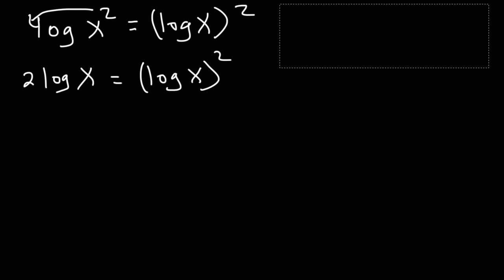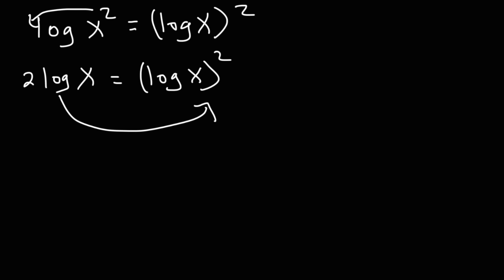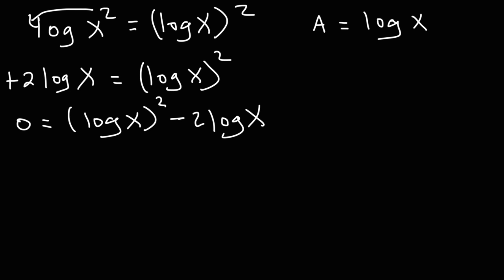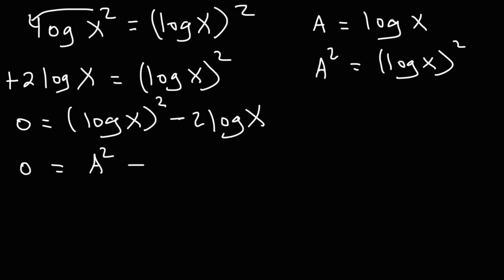Now what do you think we need to do next? I recommend taking 2 log x and moving it to the right side of the equation — it's positive on the right side but it will be negative on the left side — so we're going to have log x squared minus 2 log x. The next step is to use substitution. Let's choose the variable a and set a equal to log x. If a equals log x, then a squared equals log x squared.